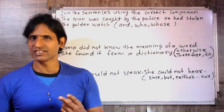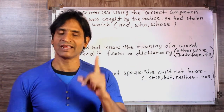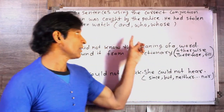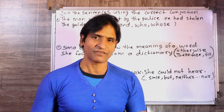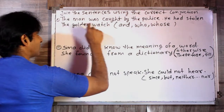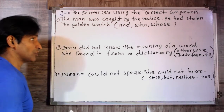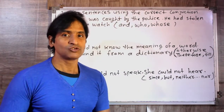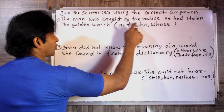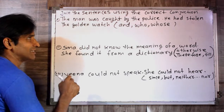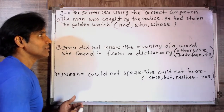Friends, in these two sentences, given in the bracket, you have to join them using the correct conjunction. Conjunctions are words that join two sentences together. The man was caught by the police — आदमी पुलिस के द्वारा पकड़ा गया. He had stolen the golden watch — वह सोने की घड़ी चुराया था. So if we use 'and': 'The man was caught by the police and he had stolen the golden watch.'